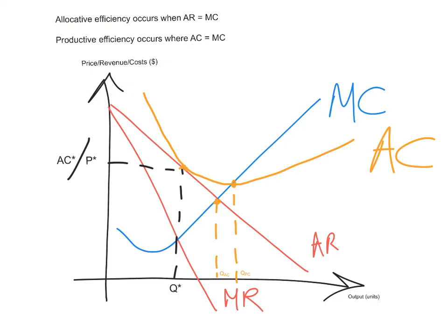However, that's not necessarily a bad thing because consumers end up being given a wider variety of products to choose from. Greater choice for consumers comes at the expense of not achieving allocative efficiency or productive efficiency, unlike perfect competition where products are homogenous or identical.